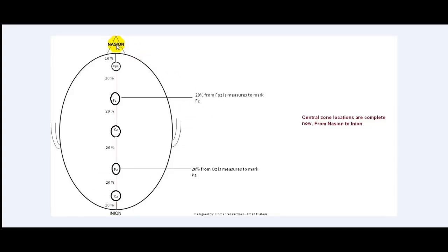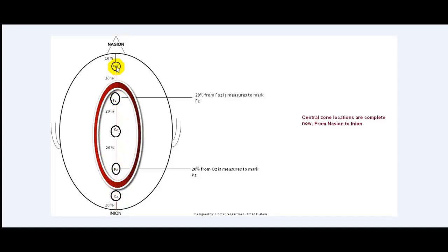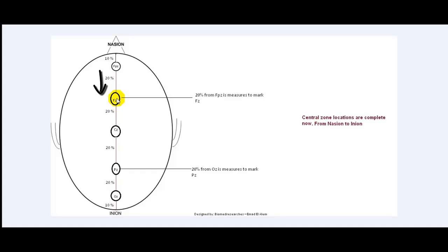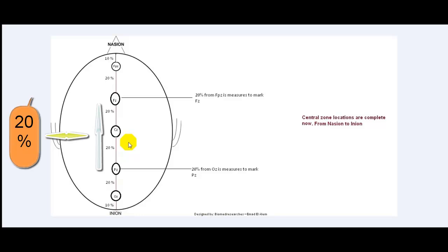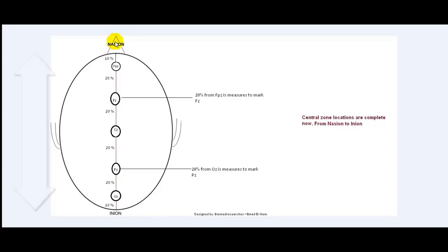Now, looking at this figure, we have Fpz, Cz, and Oz marked. To mark Fz and Pz, we measure 20% from the frontopolar zone (Fpz) towards the central zone, and the distance reached will be the point of Fz. So 20% of 32 centimeters is approximately 6.4 centimeters. The same applies to the distance from Oz to Pz. The distances from Fz to Cz, and from Pz to Cz, should each automatically read 20% of the total distance — 6.4 centimeters in our example. Once we connect all these electrodes, we will have the central area from nasion to inion connected.